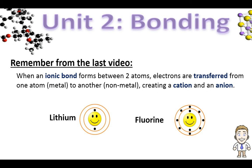Even more important is how these atoms change — they both become charged. Lithium becomes the positive cation, fluorine the negative anion. And as Coulomb's law tells us, these opposite charged particles will attract to one another. That attraction is the ionic bond.